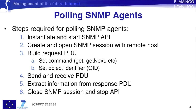To poll an SNMP agent, six main steps need to be followed. The first step is to initialize an SNMP API by instantiating and starting a new API. The second step is to create and open an SNMP session with a remote host on which the agent is running, and then build the request PDU. This is done by setting the relevant command and the object identifier. The PDU is subsequently sent to and received from the SNMP agent. The next step is to extract the information from the response PDU, which comes back as an octet string. Finally, the SNMP session is closed and the API is stopped.